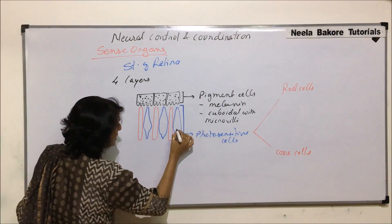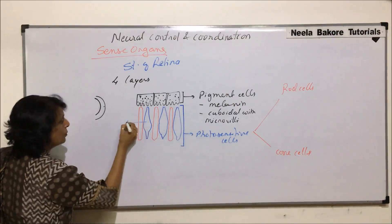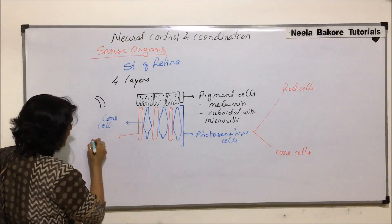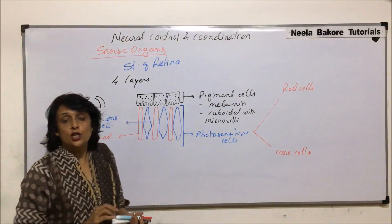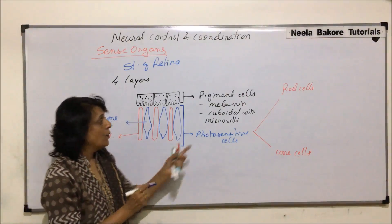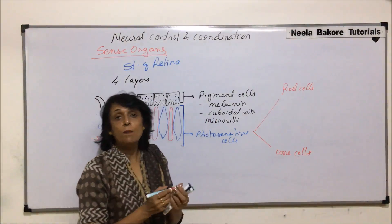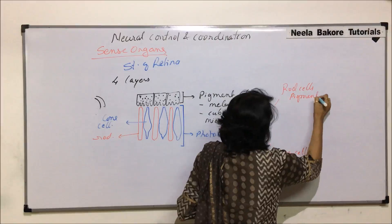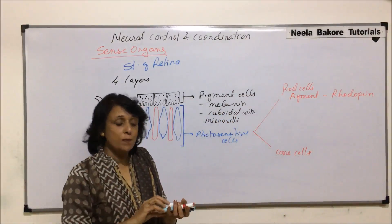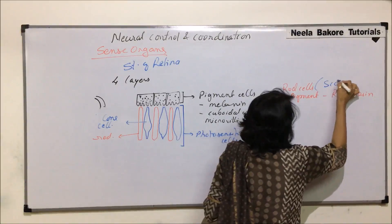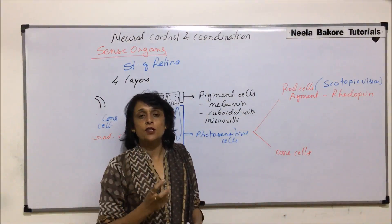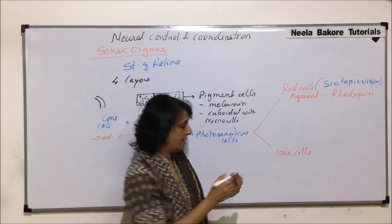The blue ones drawn here are the cone cells and the red ones are the rod cells. Rod cells are straight and rod-like, while cone cells are slightly conical — that is why the name. Rod cells have a pigment known as rhodopsin and rod cells are responsible for scotopic vision.